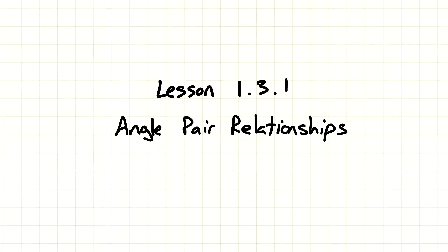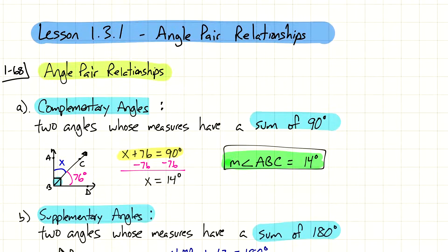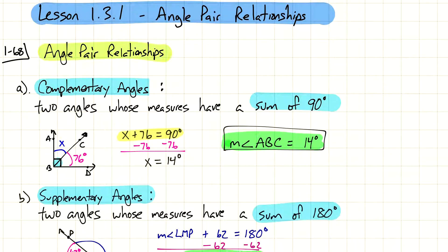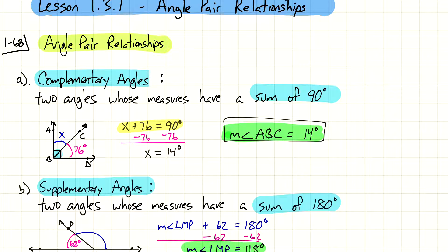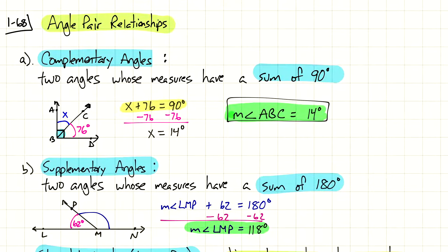Welcome everyone, this is lesson 1.3.1 on angle pair relationships. In this lesson we're going to be looking at the beginning of a long list of angle relationships we'll be looking at in this chapter and using throughout most of the school year. Some of these you might have seen already — maybe you didn't know there were names for them. I have some abbreviated definitions and some examples for you as well.